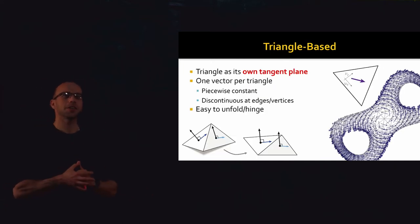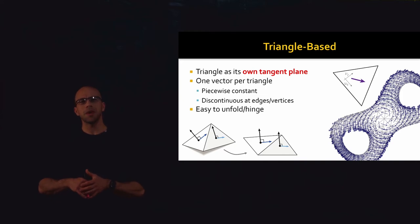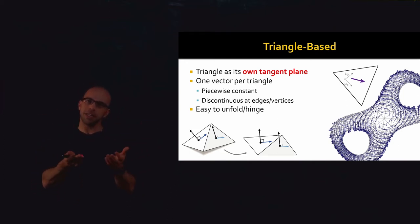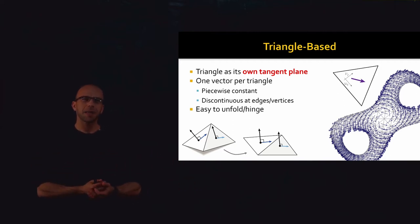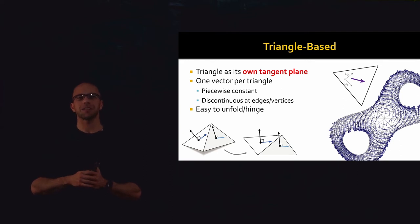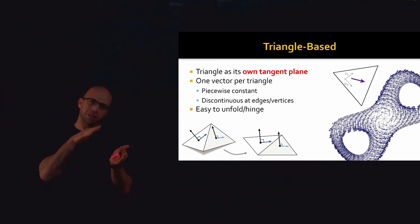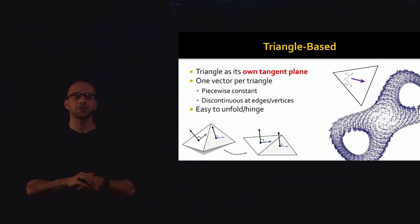The high-level picture of triangle-based vector fields is pretty straightforward. When we use the phrase 'vector field,' we mean an assignment of one tangent vector per point on our surface. That word 'tangent' is critical. If I have a 2D surface sitting in 3D, typically we don't just mean attaching a vector in R3 to every point. In vector field design, the vectors have to be tangent to the surface at the points where they're attached.